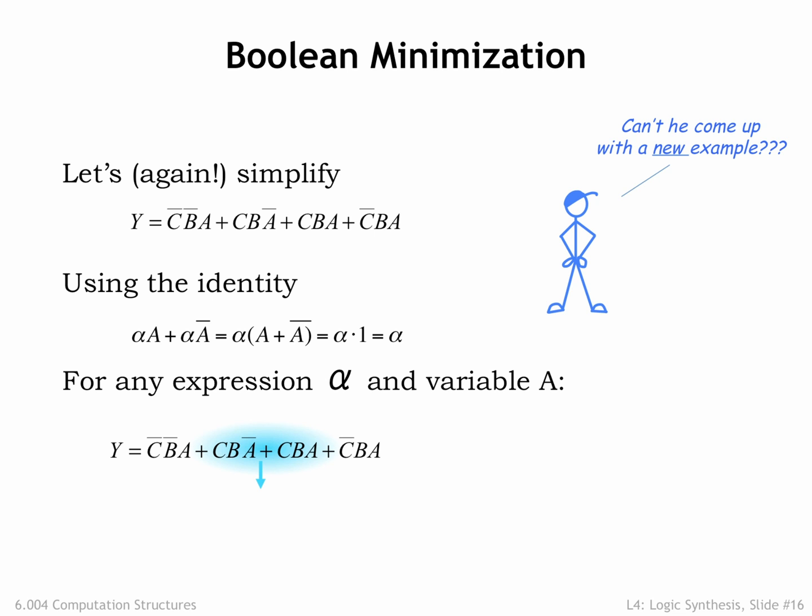So we simplify the middle two product terms to just alpha, in other words C and B, eliminating the variable A from this part of the expression. Considering the now three product terms, we see that the first and last terms can also be reduced, this time letting alpha be the expression not C and A. Wow! This equivalent equation is much smaller!